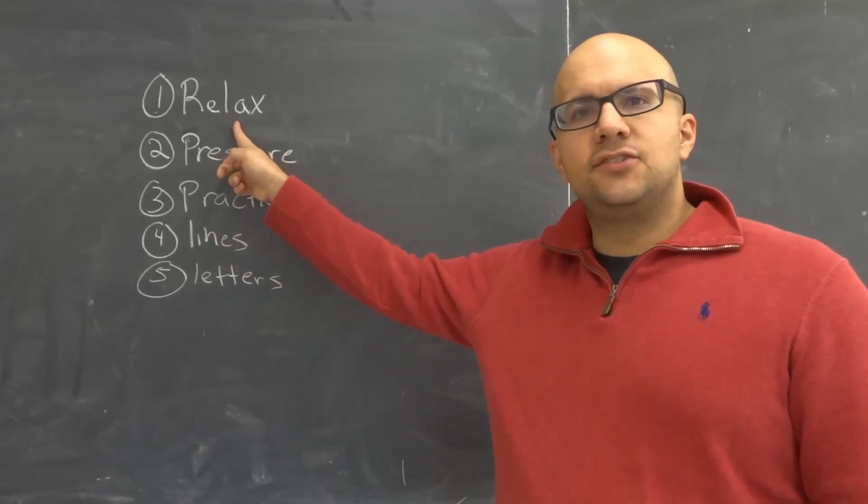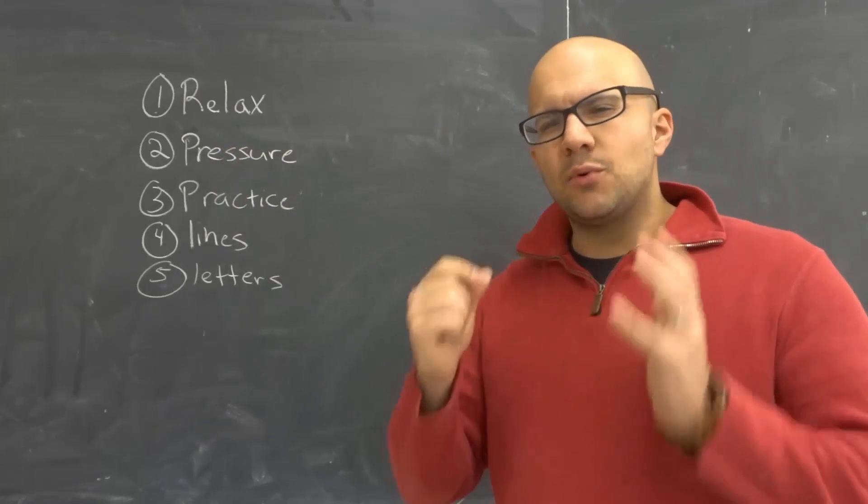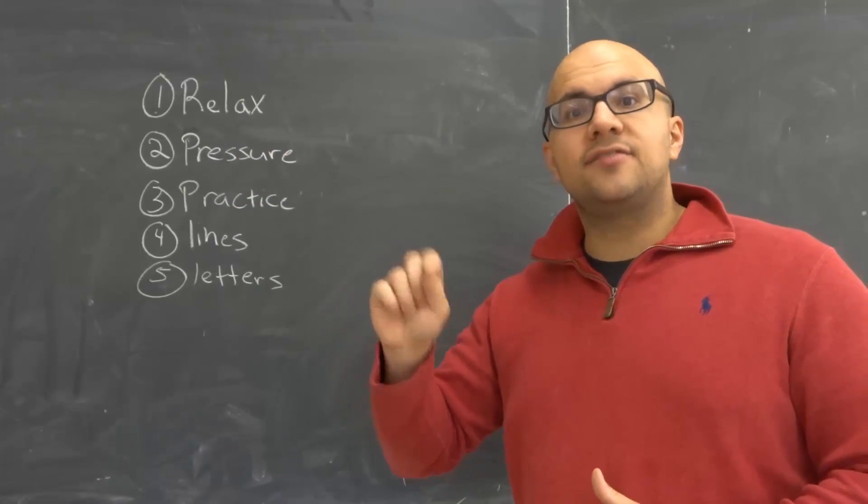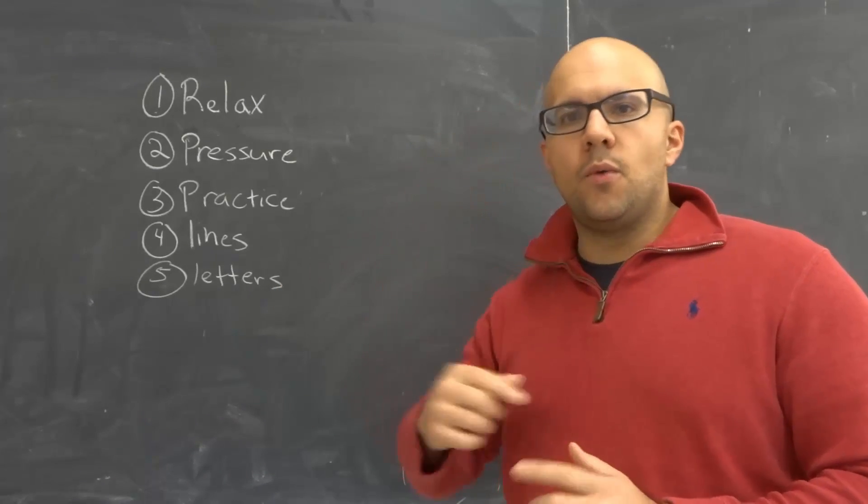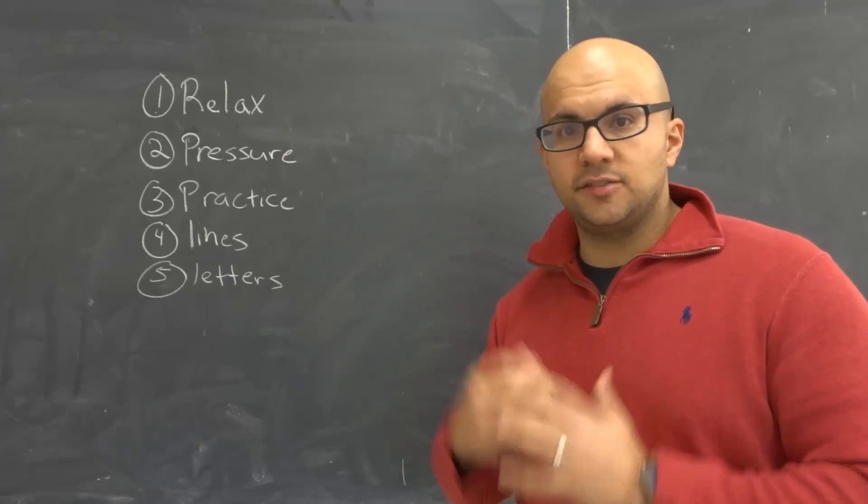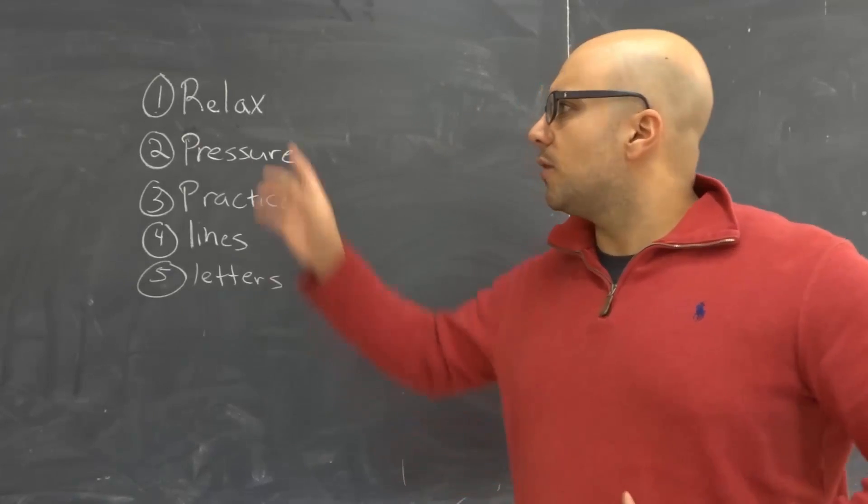The first tip is to relax your hand and relax your mind. Often times when we're writing, if our mind is moving faster than our hand, we're going to have sloppy writing because our hand is trying to catch up with what our mind is thinking. So you want to slow down your thinking process, slow down your thoughts about what you're writing. And also you want to relax your hand.